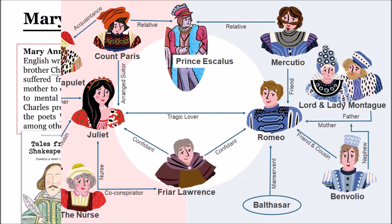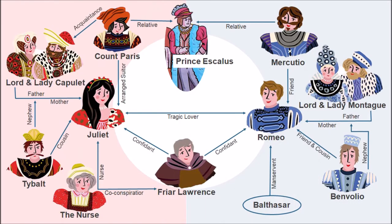Now let's talk about the characters of the story Romeo and Juliet. In this story, there are 14 characters.